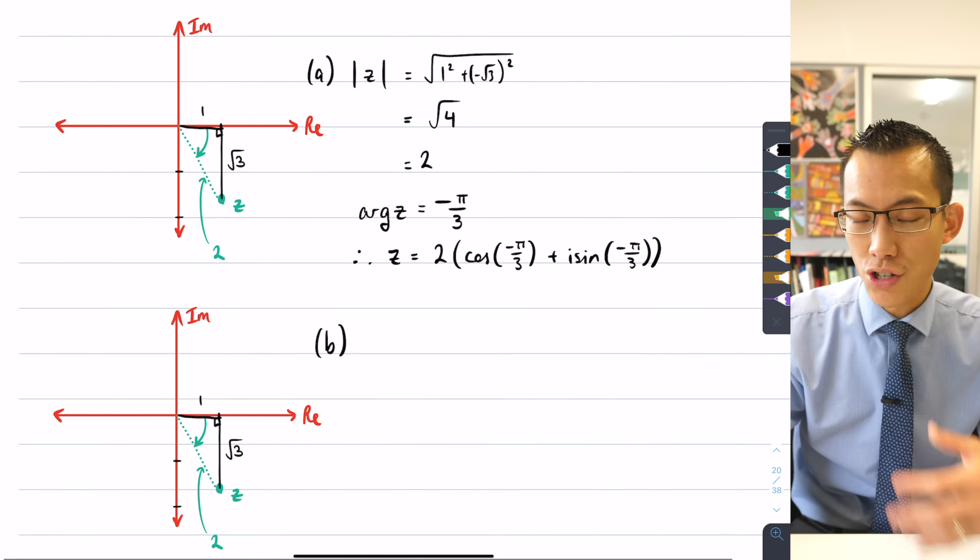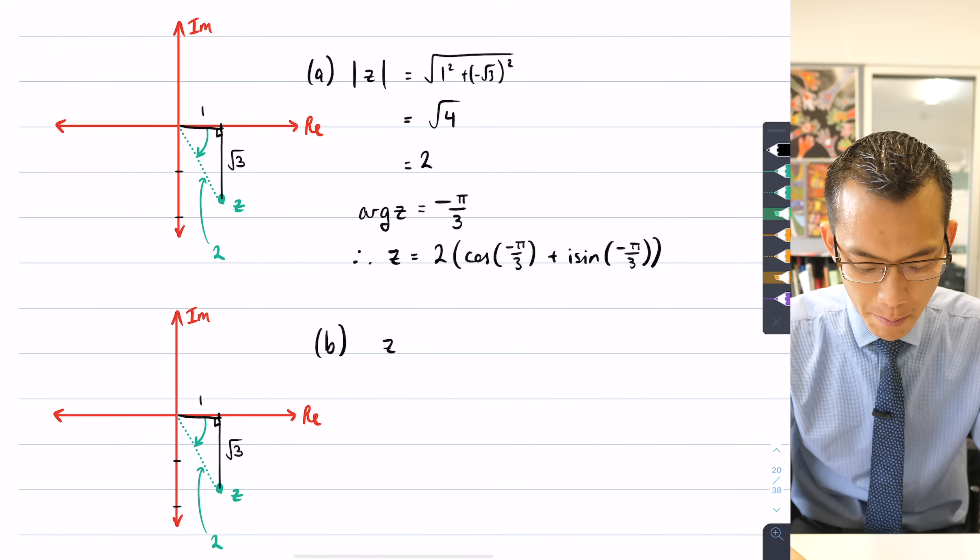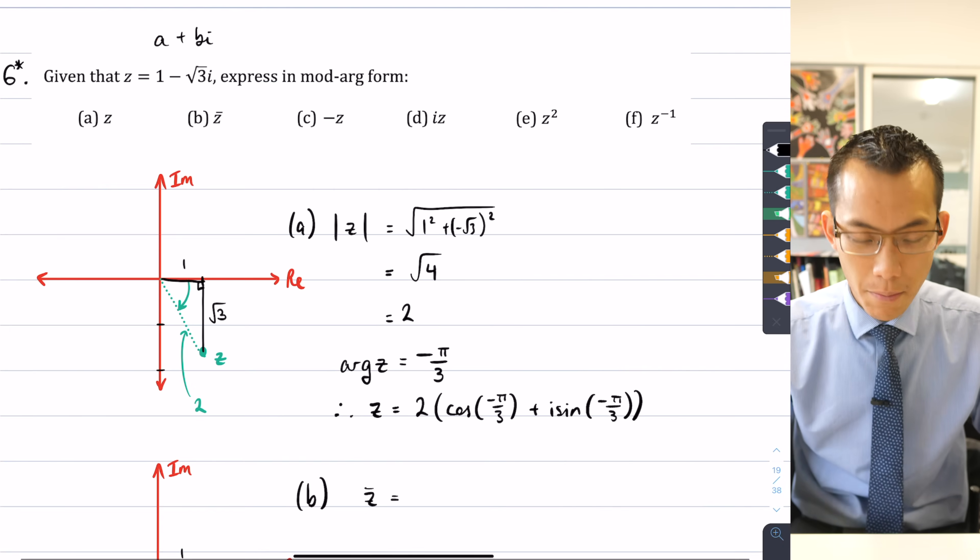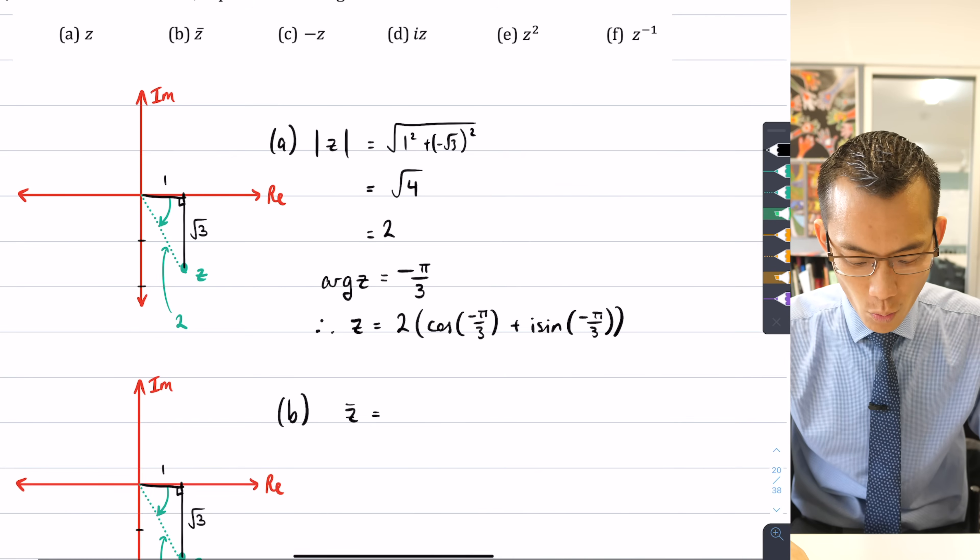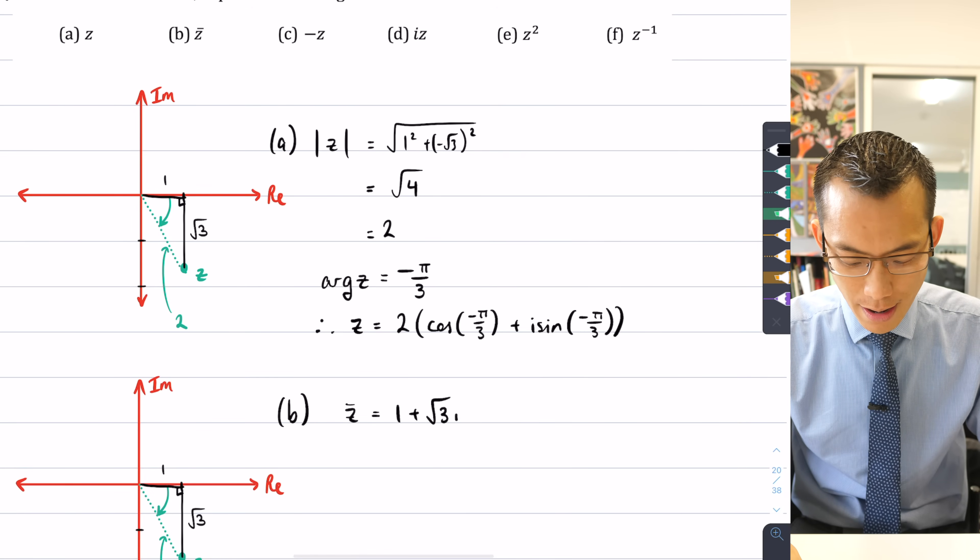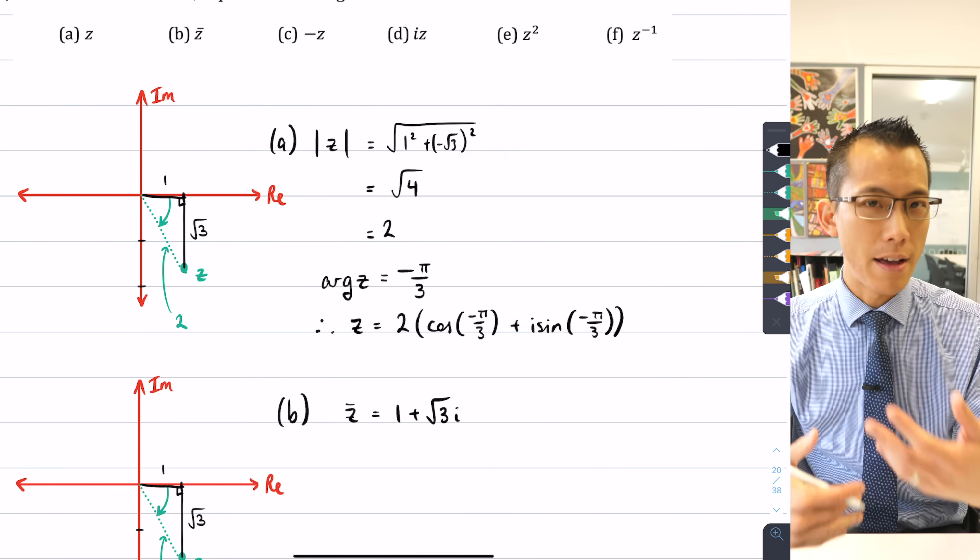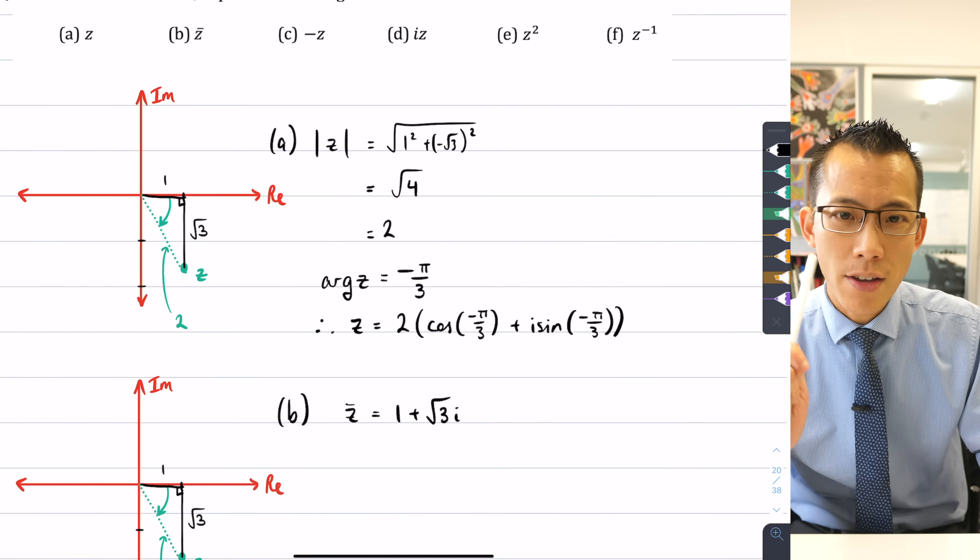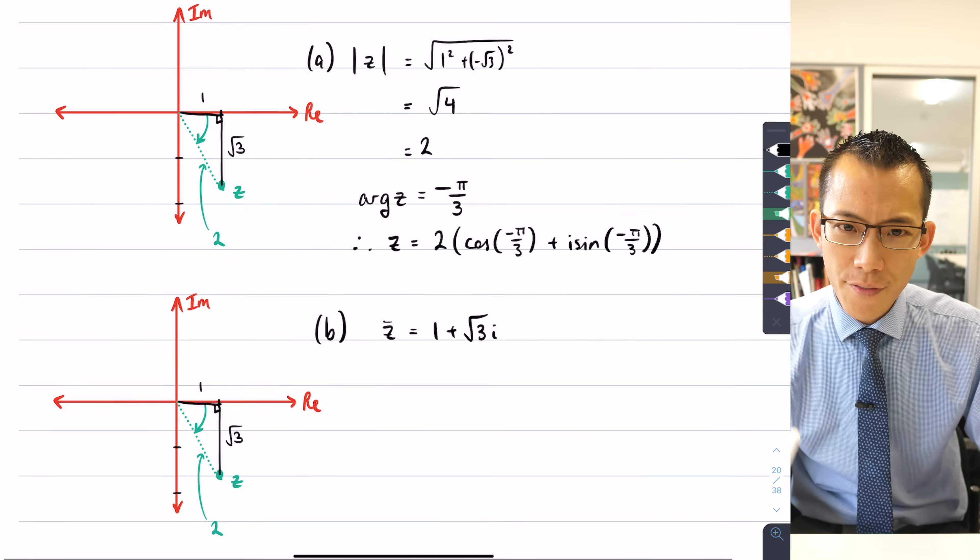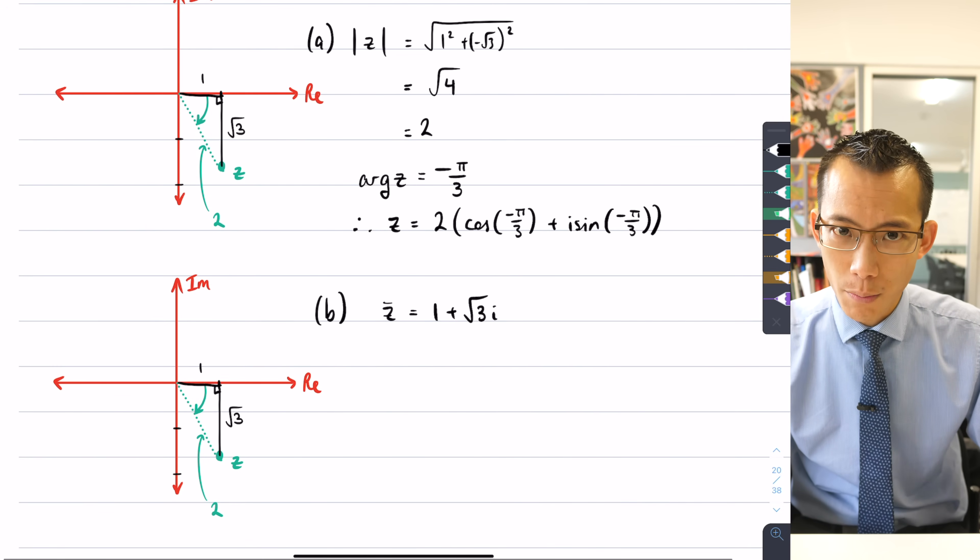Well, very simply, I can just state by definition that z̄ equals not 1 - √3i, but 1 + √3i. So it's just taking that imaginary part and flipping the sign to be its opposite. However, if you have a think about this, I have a meaning for where that is on the complex plane.